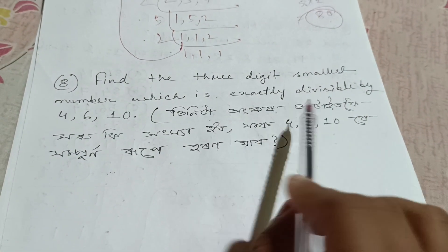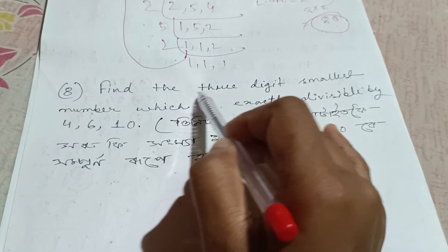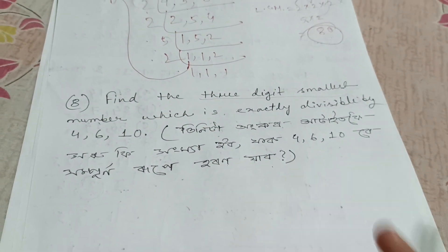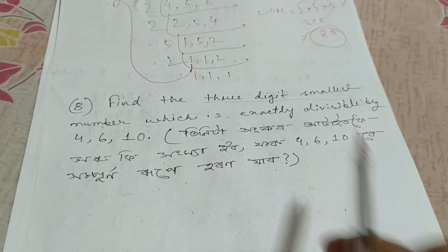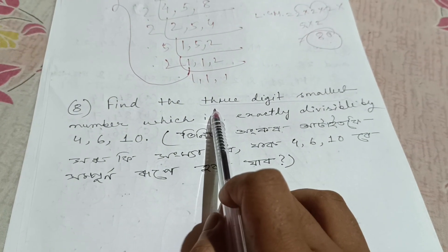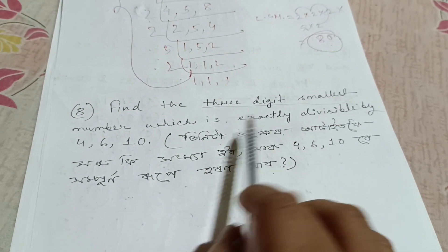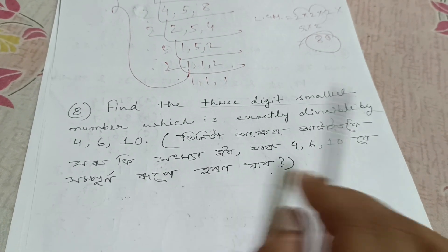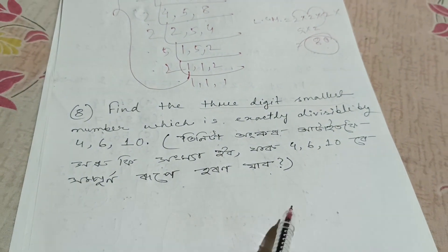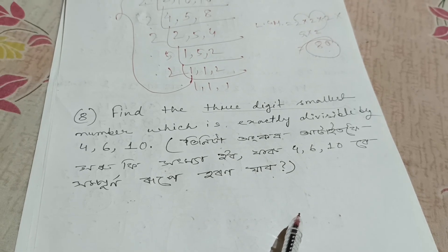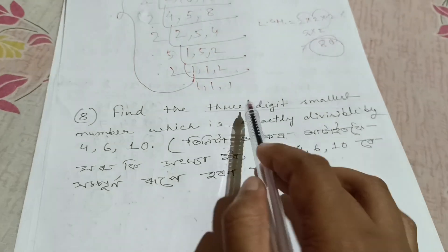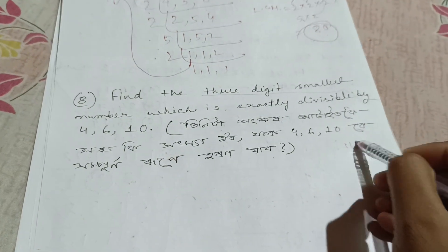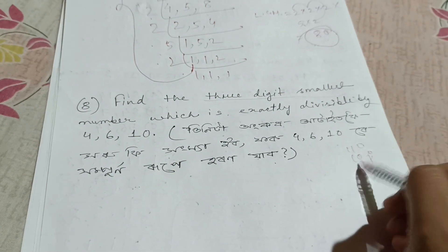Find the 3-digit smallest number which is exactly divisible by 4, 6, and 10.